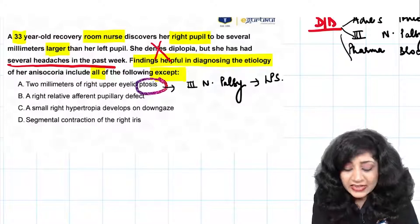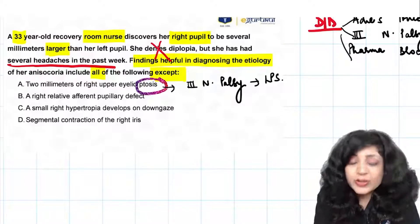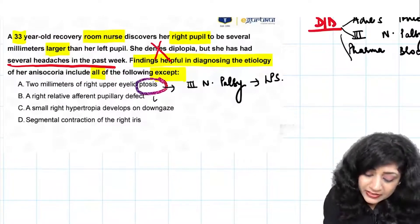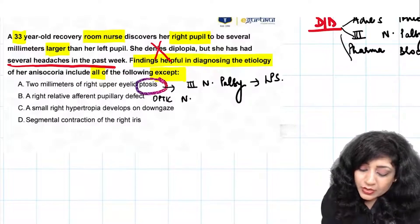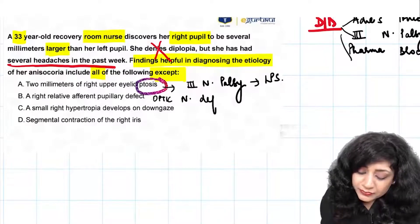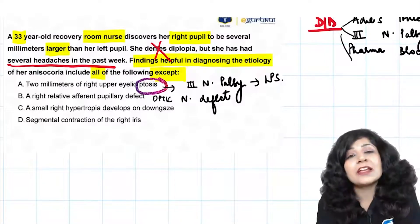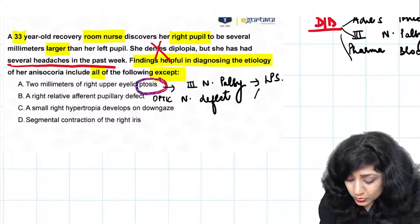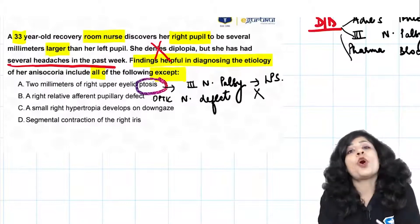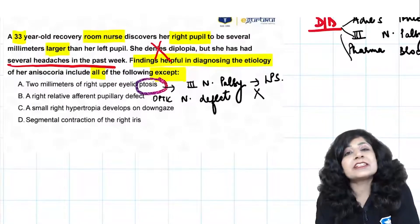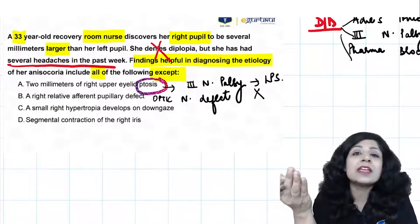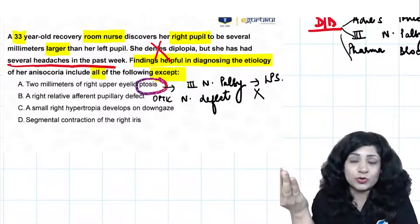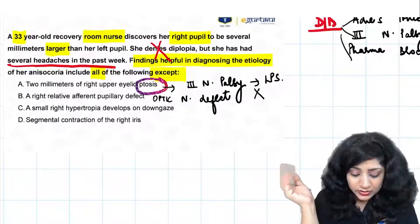Number two is RAPD — relative afferent pupillary defect. When do you get RAPD? RAPD occurs with an optic nerve defect. Is an optic nerve defect found in cases of anisocoria? No, because the optic nerve is a sensory nerve and is not going to cause anisocoria. So RAPD is not consistent with this etiology.